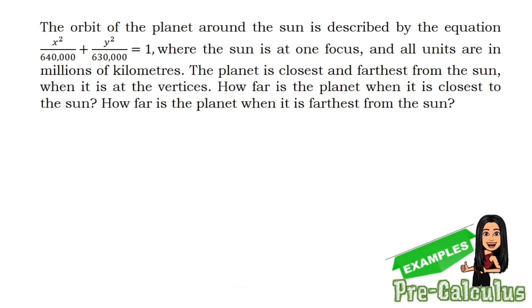For our example number two, the orbit of a planet around the sun is described by the equation x² over 640,000 plus y² over 630,000 equals 1, where the sun is at one focus and all units are in millions of kilometers. The planet is closest and farthest from the sun when it is at the vertices. How far is the planet when it is closest to the sun, and how far when it is farthest? Since the standard form of equation is given, we can proceed with the computation before the illustration.